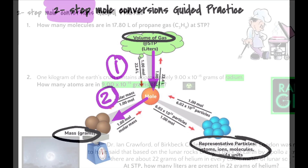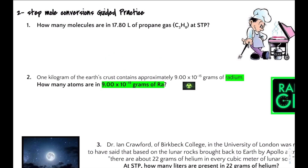Let's do some guided practice. How many molecules are in 17.80 liters of propane gas C₃H₈ at STP (standard temperature and pressure)? Our given value here is 17.80 liters — that's what we're starting with — and we're converting to molecules. Let's set up our dimensional analysis table.